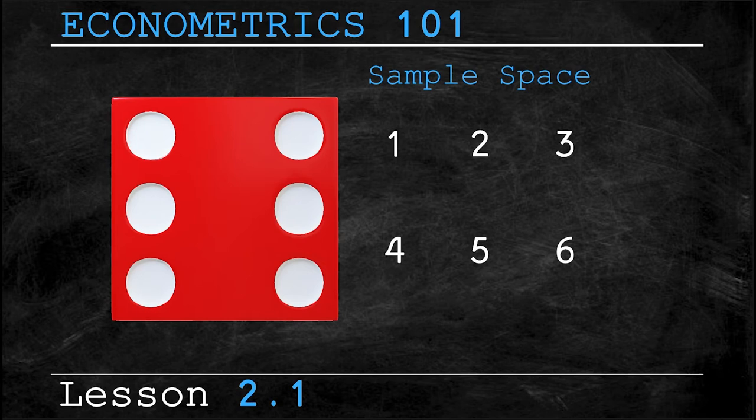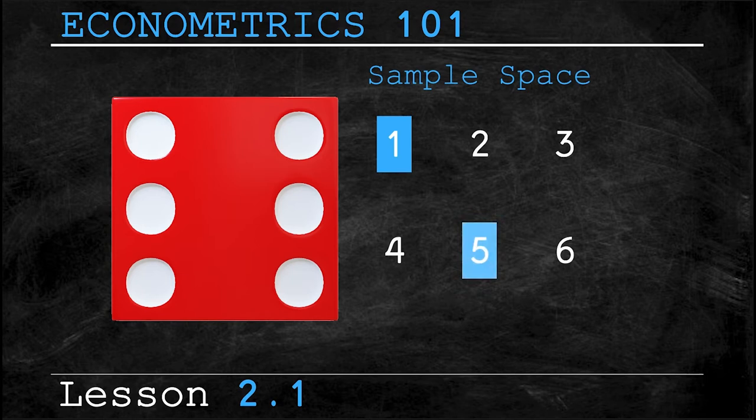Now an event is a set of one or more specific outcomes. For example there is a one and sixth chance that each of the following events occur. For example I roll a one, or I could have also rolled a five, or I had a chance of rolling a three. Now in a single roll you cannot have more than one event or outcome.